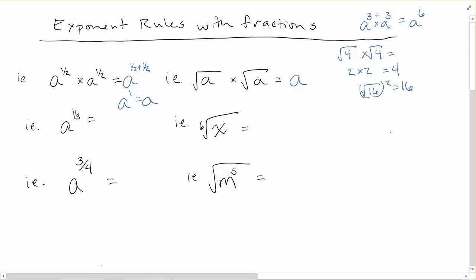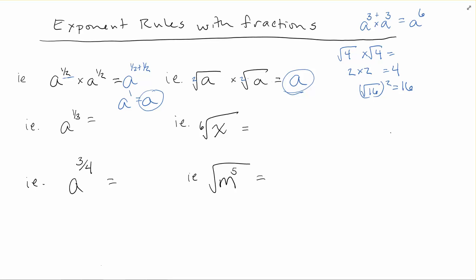The square root of a times the square root of a gives us back a — and since a to the power of 1/2 times a to the power of 1/2 also equals a, you can see the connection: a to the 1/2 power is the same as the square root of a. When we write square roots, we don't often add the two — that index is implicit, invisibly assumed to be there.